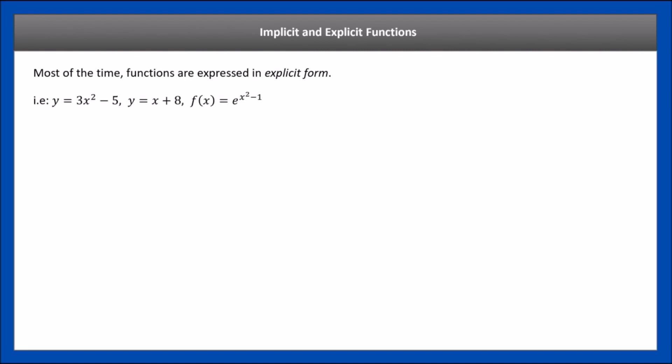Essentially you just have one function written in terms of another, instead of having them all mixed into one side. The second function is y equals x plus 8. The third function is f(x) equals e to the x squared minus 1. Remember f(x) is sort of like y — all the x stuff is on one side, expressed in terms of just x.